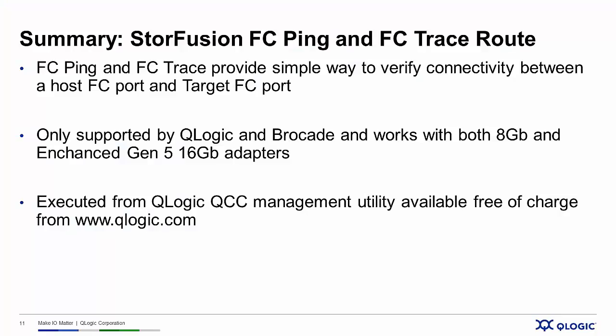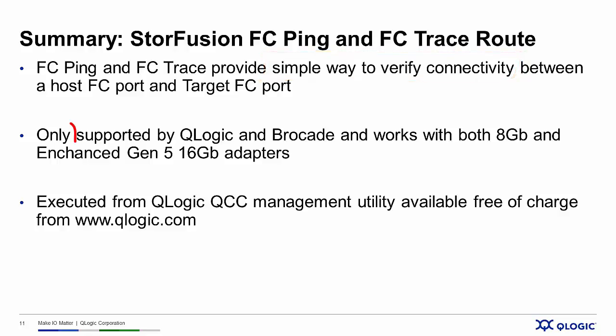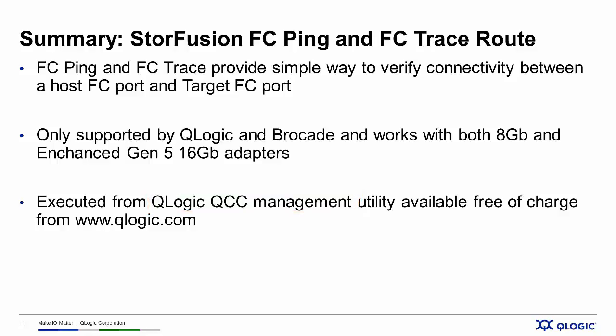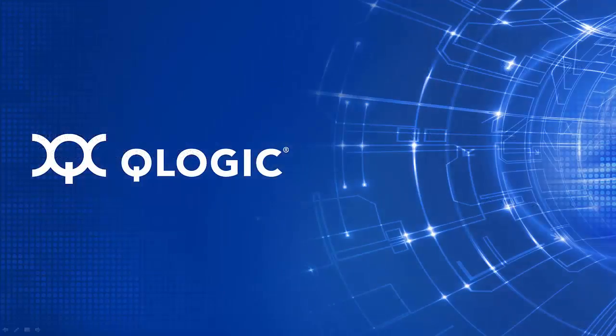In summary, FC-Ping and FC-TraceRoute provide a very simple way to verify connectivity between host fiber channel ports and storage target ports. These features are only supported by Q-Logic and Brocade, and they work with either 8GB or enhanced Gen 5 16GB fiber channel adapters from Q-Logic. We execute these commands using Q-Logic's QConverge Console management utility, available free of charge for download from Q-Logic.com using the download link on the homepage. That's it for this edition of StoreFusion Introduction by Q-Logic. Thank you for your time and attention.